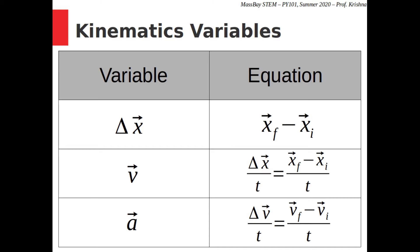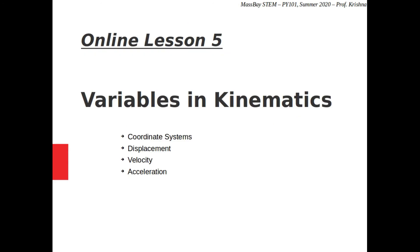We have now defined three major variables to describe the motion of an object: displacement (the change in position with direction), velocity (the rate of change of position with direction), and acceleration (the rate of change of velocity with direction). In principle, we could continue to the rate of change of acceleration, but most physics problems do not require any further variables. In the next video, we will see how to use these three quantities to describe a wide range of physical systems.